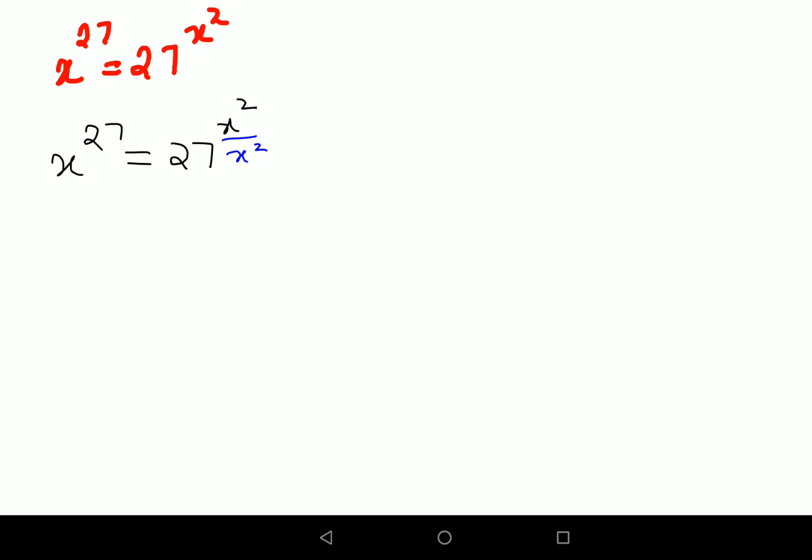So here what I will get is x raised to 27 upon x square is equal to 27. Why? Because this is canceling and you get the answer as 1, so 27 raised to 1 can be written as just 27.